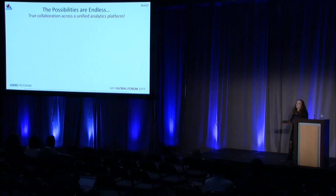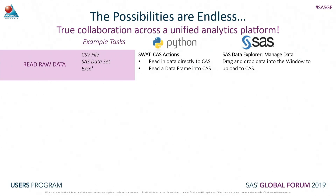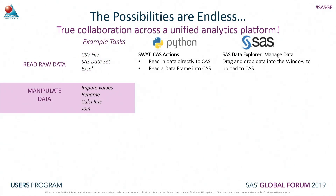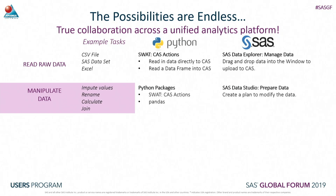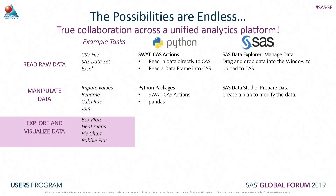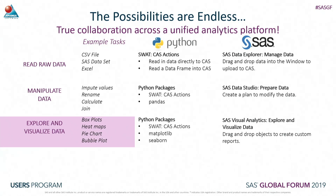The possibilities are endless, and you can have true collaboration across a unified analytics platform. To read in raw data such as CSV files, SAS data sets, or Excel files, there are two options: use Python to read data directly into CAS using SWOT, or use SAS Data Explorer to manage the data by dragging and dropping it into the interface. When manipulating data - imputing values, renaming - within Python we can use SWOT or pandas, or we can use SAS Data Studio to prepare the data. For exploring and visualizing data with box plots, heat maps, and pie charts, we can do that in both Python and SAS Visual Analytics.